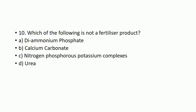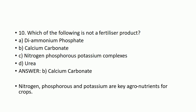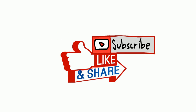Which of the following is not a fertilizer product? Options: A) diammonium phosphate, B) calcium carbonate, C) nitrogen-phosphorus-potassium complexes, or D) urea? The correct answer is calcium carbonate. Calcium carbonate is not a fertilizer product. Nitrogen, phosphorus, and potassium are the key agronutrients for crops, but calcium carbonate is not a fertilizer product. That's all for today, thank you friends for watching.